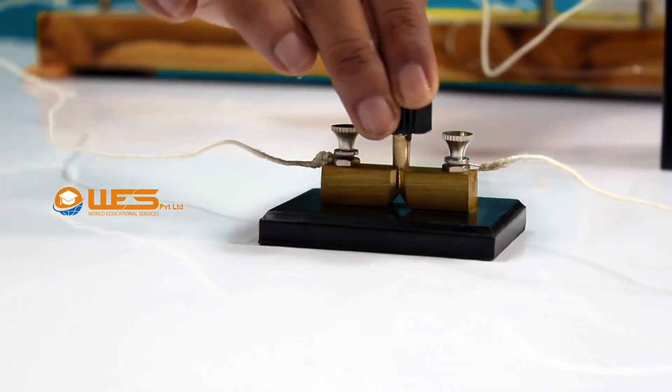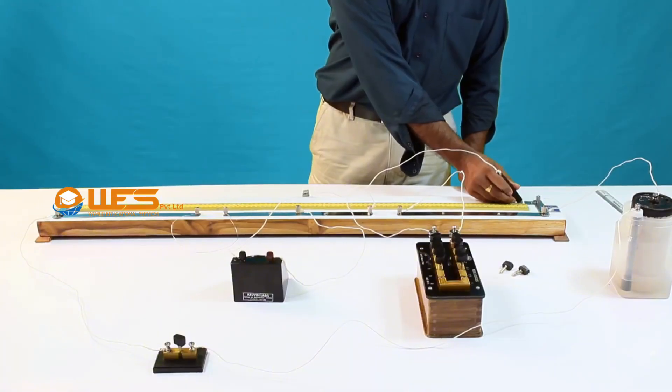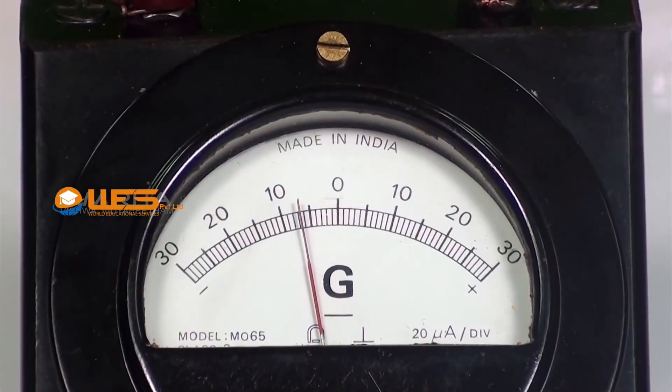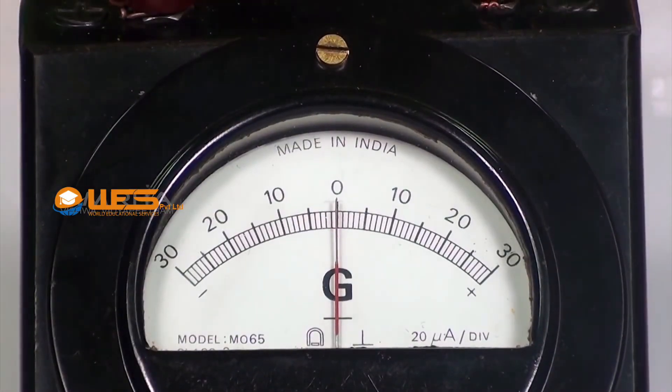Insert the key and press the jockey near A and then near B. If the galvanometer deflections are in the opposite direction, then the connections are correct.